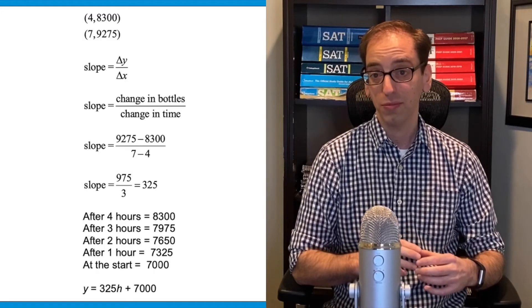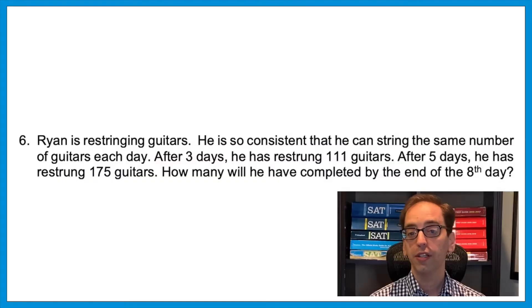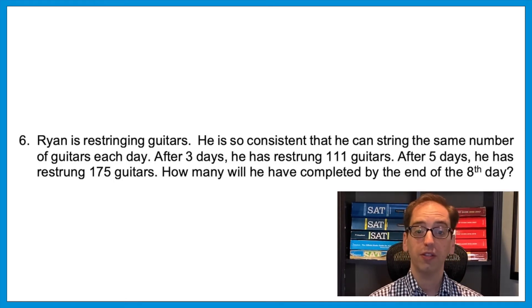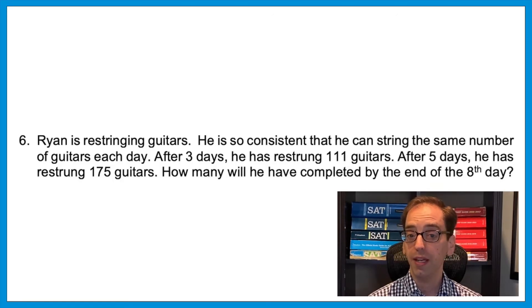This is a harder version of Melissa's balloon — I call it the bottle variation. Simply put: if they don't tell you the rate of change for a linear situation, you can treat the data like coordinates and find the slope. To find it, use change in units over change in time. Let's look at another cousin: Ryan is restringing guitars so consistently that he strings the same number each day. After three days he has restrung 111 guitars, and after five days he has restrung 175 guitars. How many will he have completed by the end of the eighth day?